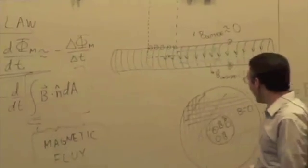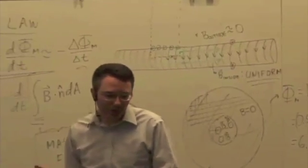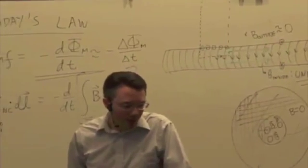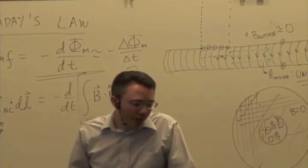Just find the change in flux, which is going to be 6.3 times 10 to the minus 4 tesla meters squared minus 2.3 times 10 to the minus 4 tesla meters squared. We're given the fluxes here, not fields.